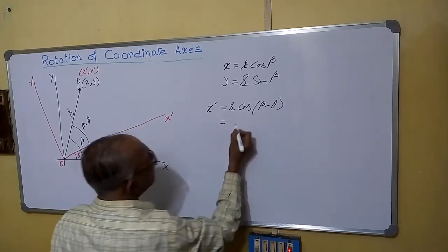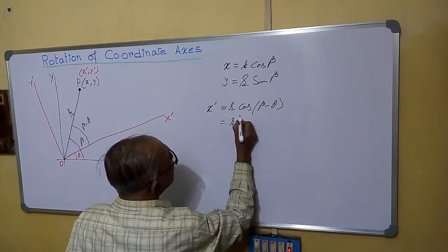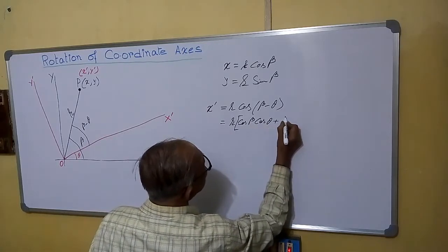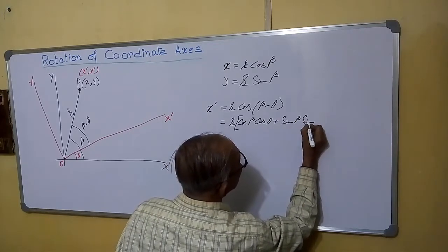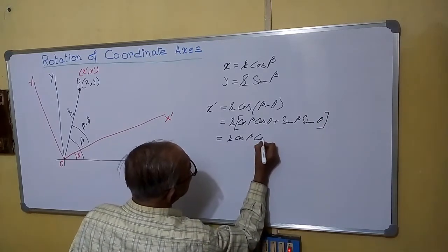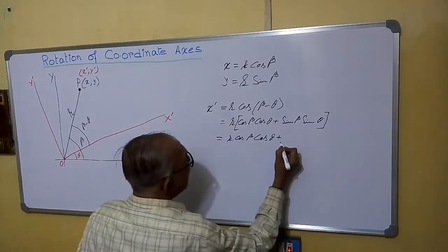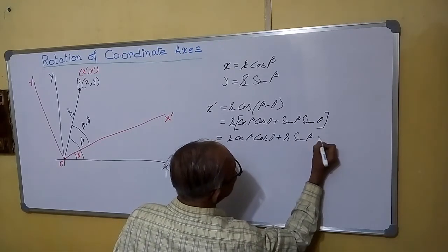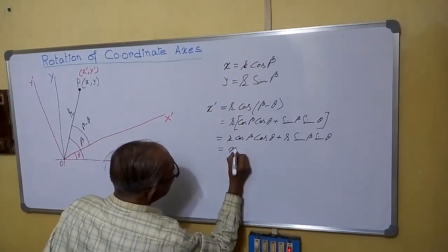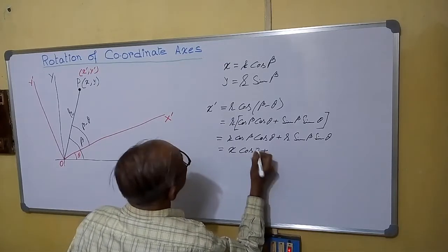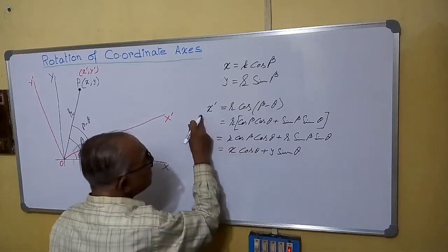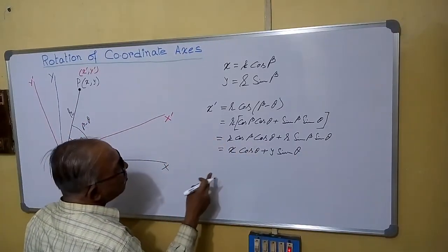Expanding using cos(A minus B): this equals r cos(beta)cos(theta) plus r sin(beta)sin(theta). But r cos(beta) is x and r sin(beta) is y. So x-dash equals x cos(theta) plus y sin(theta). This is our relation for x-dash in terms of x, y, and theta.